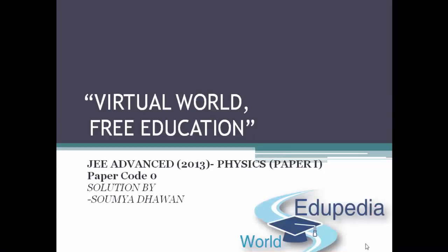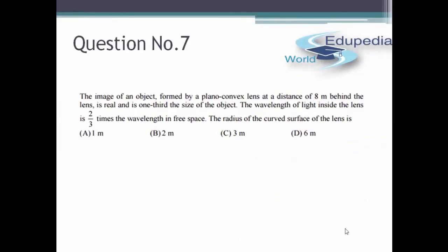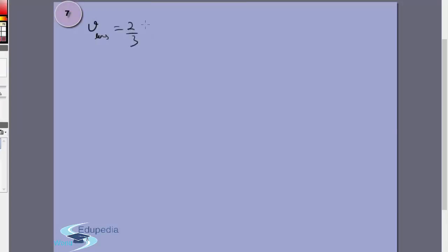The next question is a straightforward application of the lens formula. First of all, we are given that the wavelength of light inside the lens is 2/3 of that in free space. So the speed inside the lens is equal to 2/3 times the speed in free space, which means that mu has to be 3/2 because mu is inversely proportional to the speed.